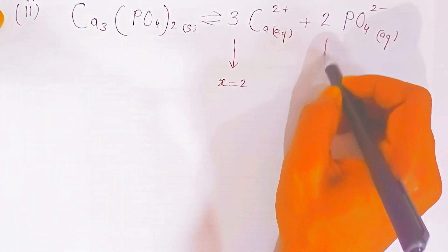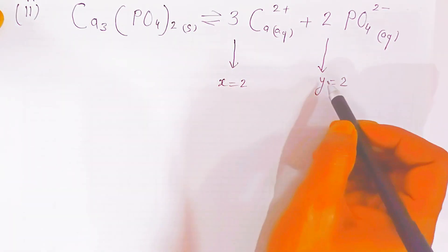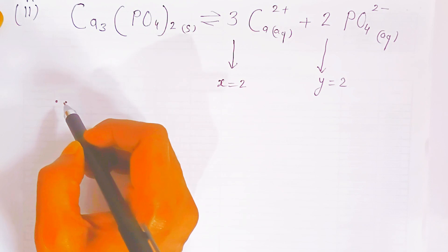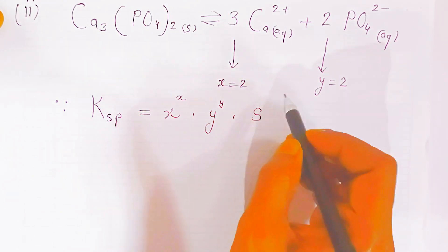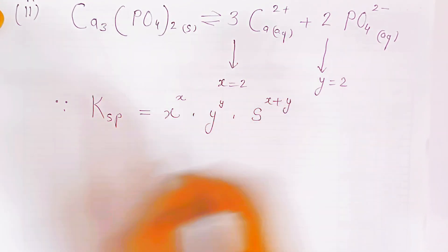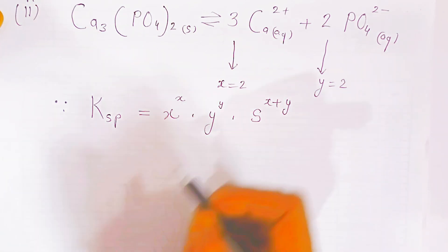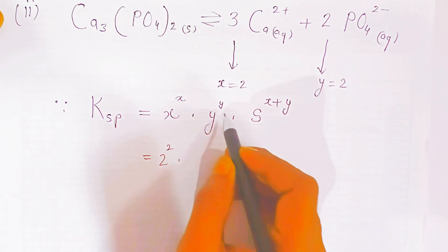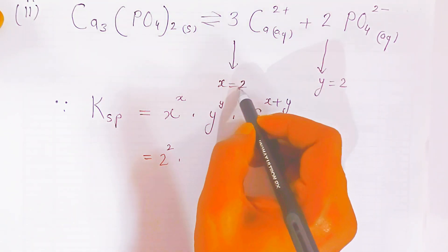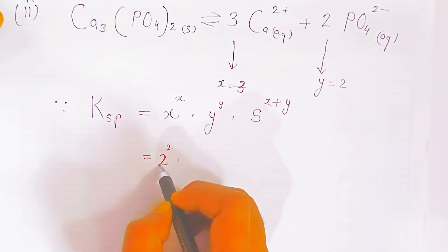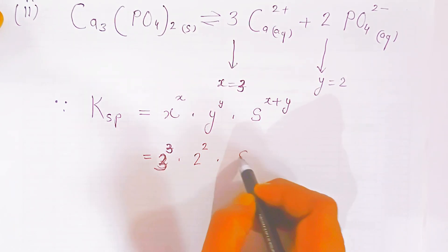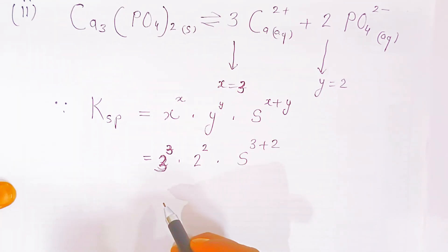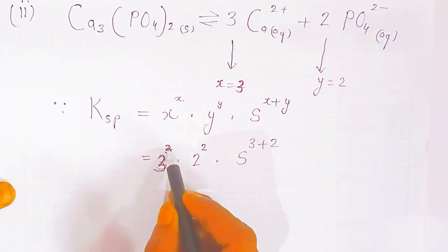Here the coefficient of calcium is x = 3, and the coefficient of phosphate is y = 2. Using the solubility product formula Ksp = x^x · y^y · S^(x+y), we put in 3 raised to 3 times 2 raised to 2 times S raised to (3+2). The coefficient of the cation is 3 and the coefficient of the anion is 2.